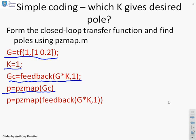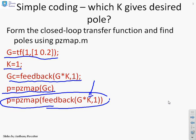Now the viewer is reminded that you can compact a lot of this into a single line if you want to, and you'll see the single line is there, which in essence assumes that if G already exists, you can write the statement p equals pzmap of feedback G times K comma 1. And you can manually change the K in here on the command line if that makes life easy for you.